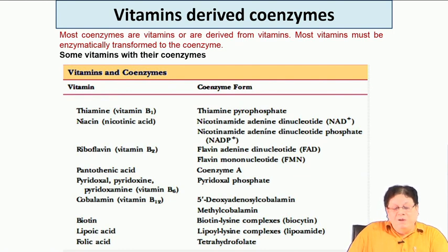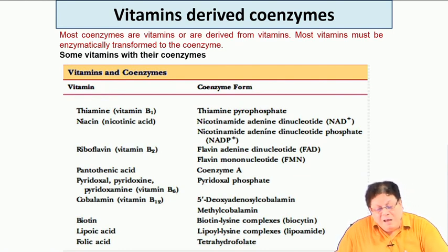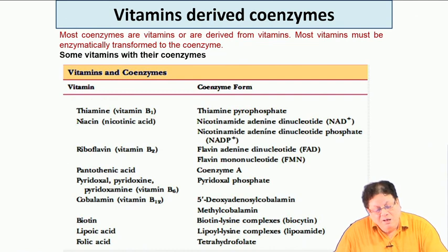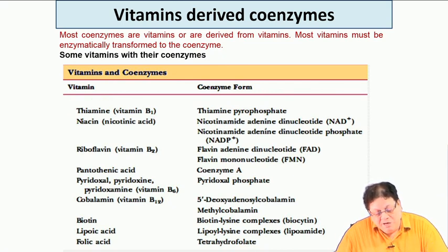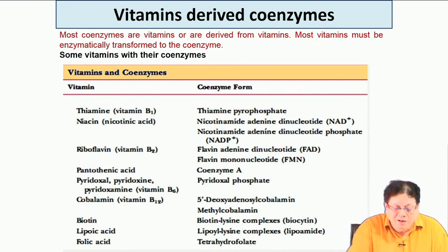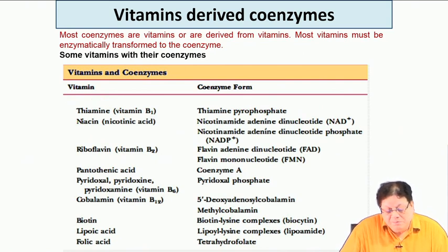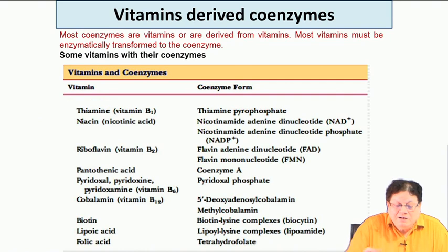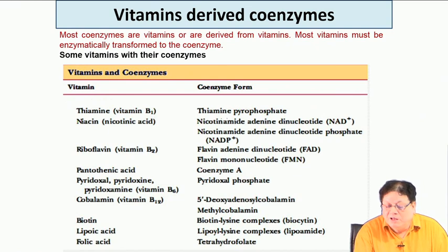Some of the B vitamins include thiamine (B1), niacin, riboflavin, pantothenic acid, pyridoxal, cobalamin, biotin, lipoic acid, and folic acid. We will cover their chemistry and biochemistry. As noted, the vitamin must be converted to the coenzyme form — for example, thiamine must be converted to thiamine pyrophosphate, and niacin must be converted to NAD⁺ or NADP⁺.